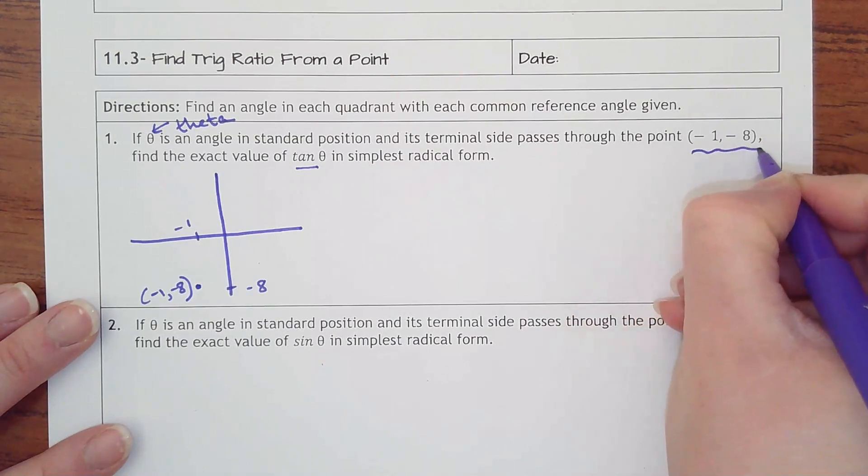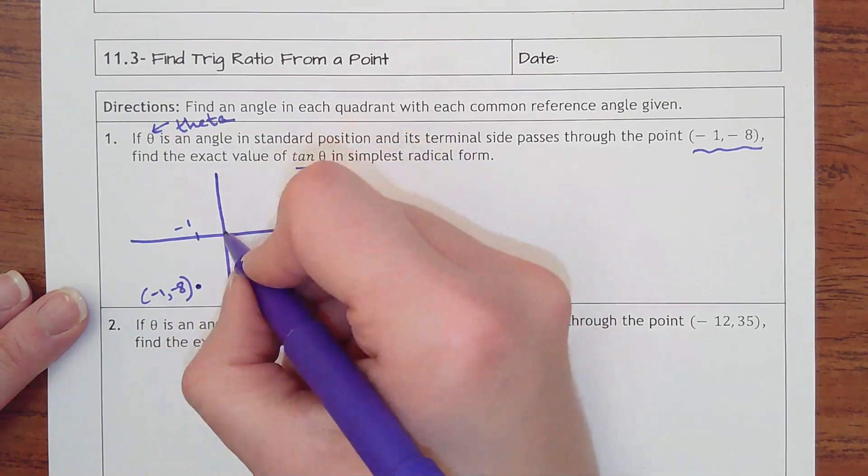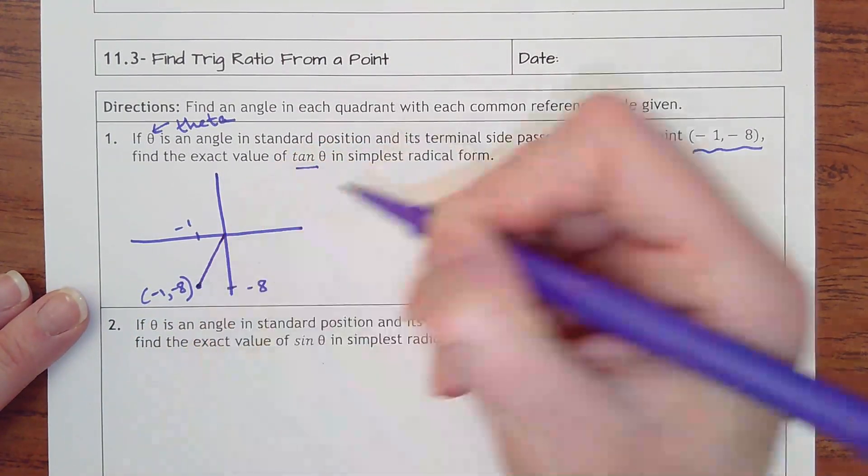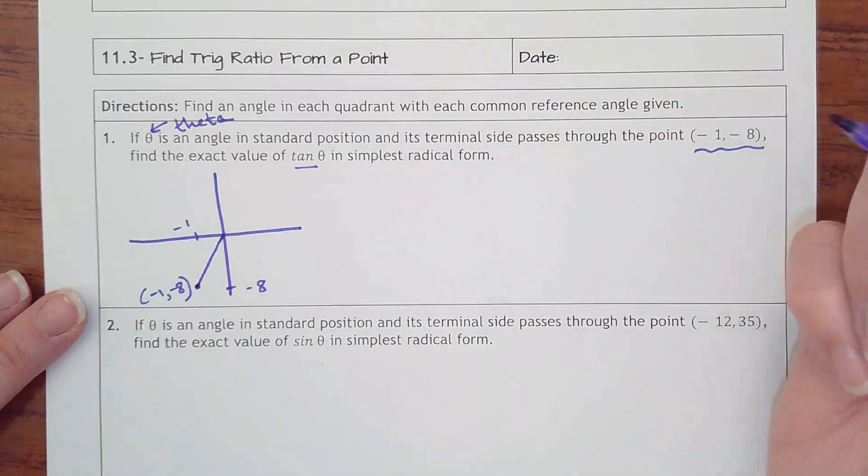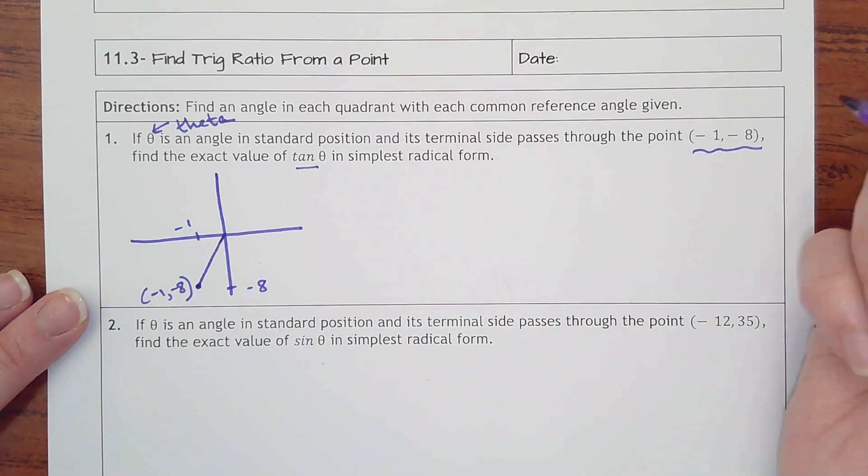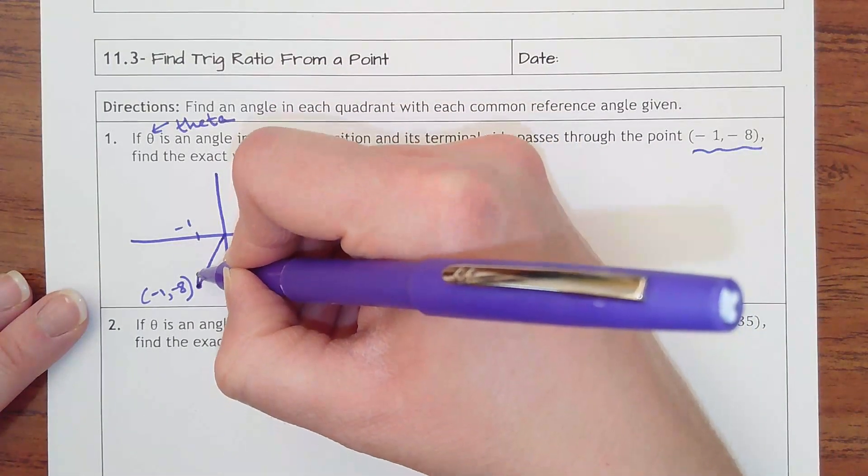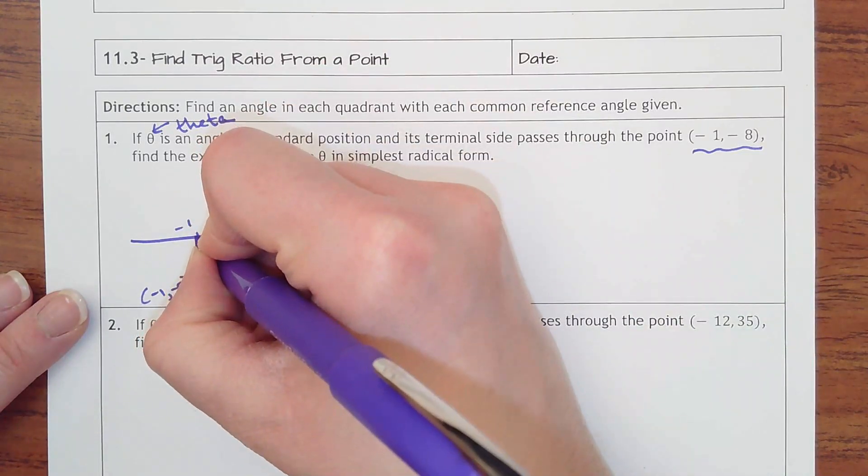So what we are now doing is creating a triangle on a coordinate plane. Our point here is (-1, -8). I'm gonna go back 1, down 8. Then take from the origin, make a diagonal line to that point. You are creating a triangle by making a leg go from that point to the x-axis. See how this is my right angle here.